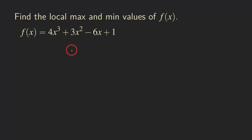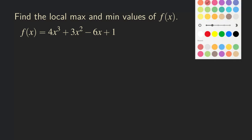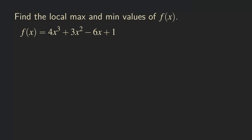First, we need to find the critical numbers. To find the critical numbers, we need to take the derivative of this function first. So let's start by taking the derivative. We have f prime of x, and that's equal to 12x squared, plus 6x, minus 6. So that's our derivative.